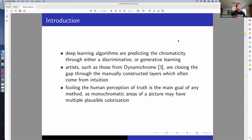While deep learning algorithms are predicting the chromaticity, the color, through either discriminative or generative learning, artists such as those from Dynamic Chrome are closing the gap through manually reconstructing the layers, which often take intuition.